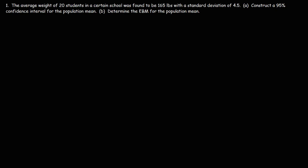In this video we're going to talk about how to solve problems using the student's t distribution table. Number one: the average weight of 20 students in a certain school was found to be 165 pounds with a standard deviation of 4.5. Part A: construct a 95% confidence interval for the population mean.